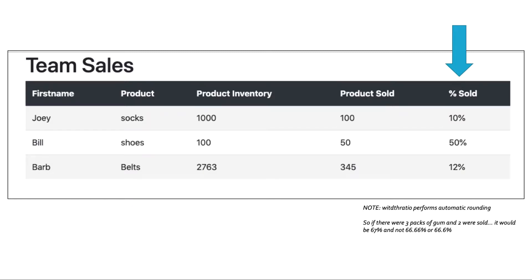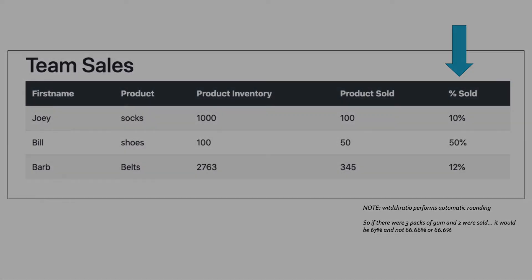This automatically rounds for us. Maybe not so easy to see here, but if we were to see something very simple, like somebody had three pairs of socks in their inventory and they sold two, we would see 67% and not 66.6 or 66.66%, it automatically rounds for us. So it does the job. But now let's get into exactly what it is, how we're using it and how it does what it does.